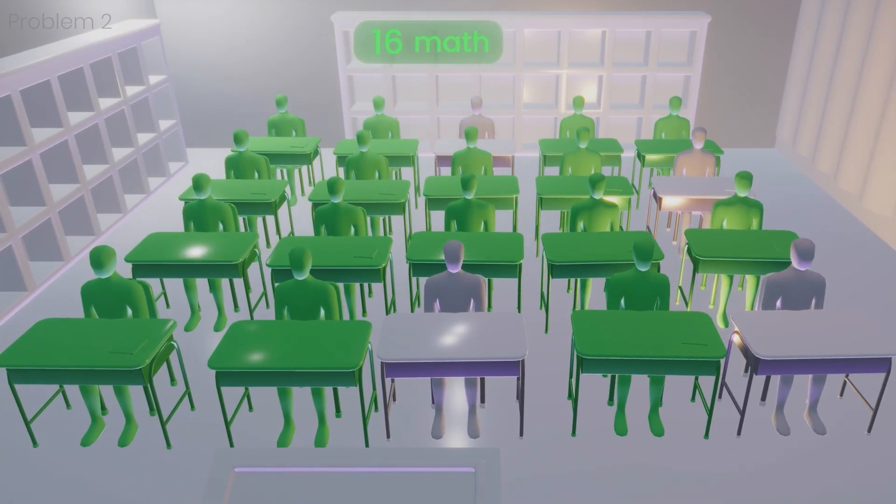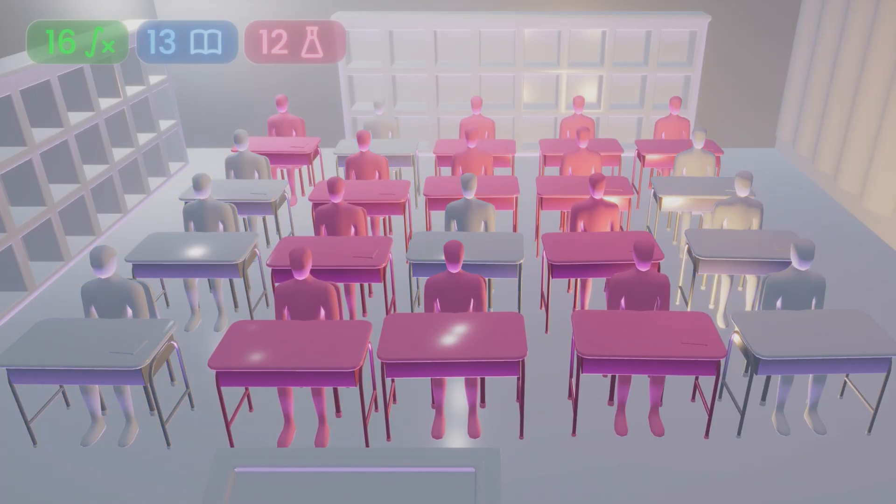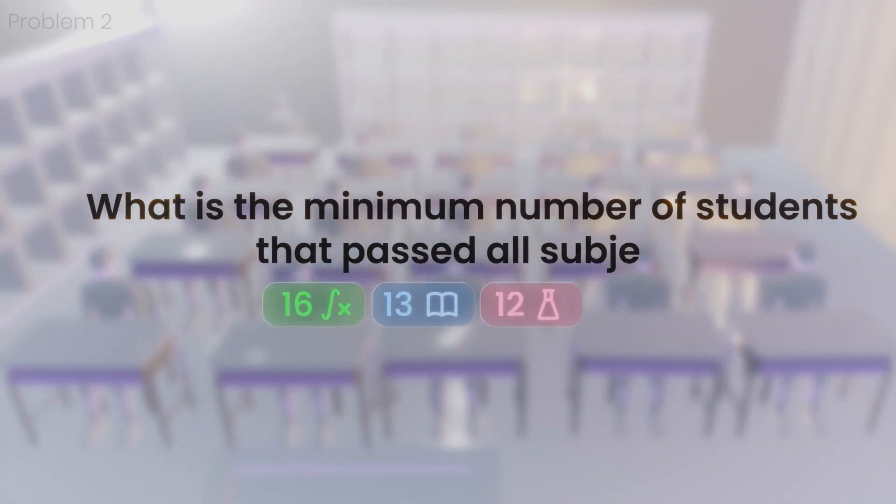In a class of 20 students, 16 passed mathematics, 13 passed English, and 12 passed science. What is the minimum number of students that passed all subjects?